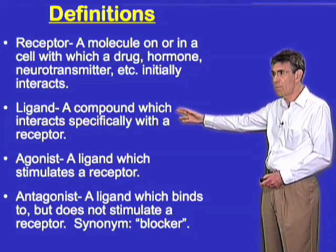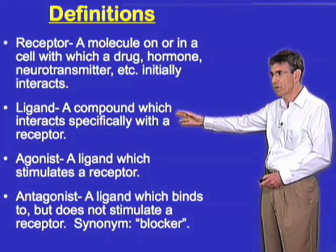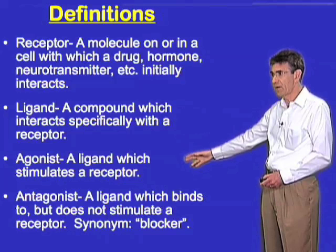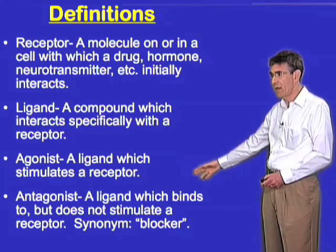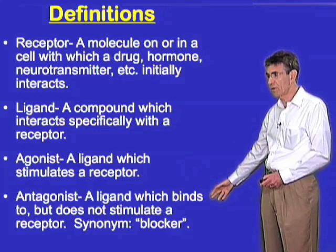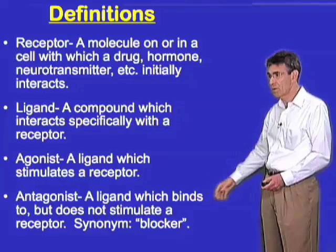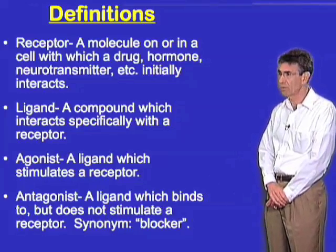There are two main types of ligands: agonists, which stimulate the receptor, and antagonists, which bind to but do not stimulate the receptor. They are sometimes known as blockers.